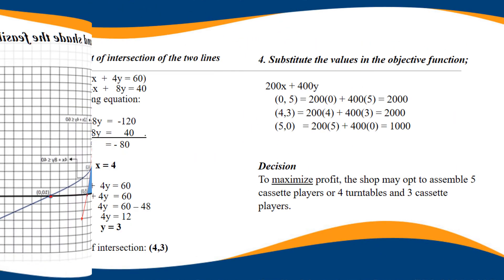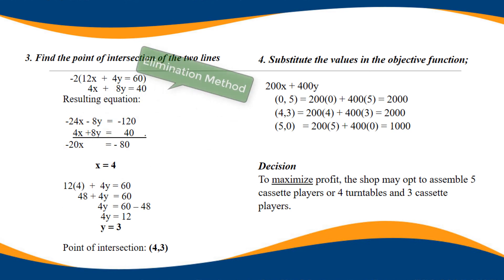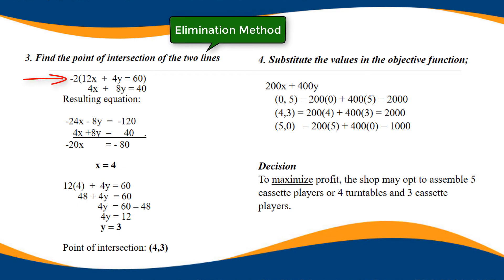So using the elimination method, we have the computation here. 12X plus 4Y equals 60, and 4X plus 8Y equals 40. Then convert one equation so you can eliminate a variable. Multiply the first equation by negative 2: negative 24X minus 8Y equals negative 120. Then add it to 4X plus 8Y equals 40.